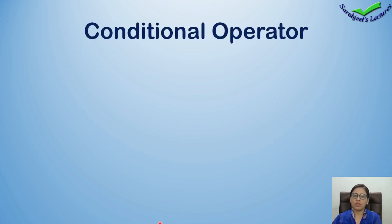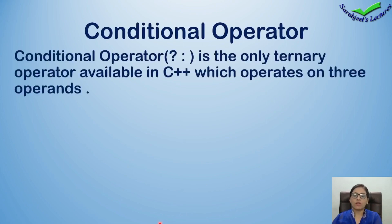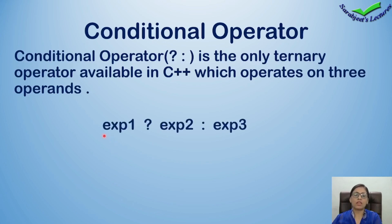Next hum dekhte hain conditional operator kya hota hai. Conditional operator ka jo sign hota hai, woh hai question mark and colon ka sign. Question mark and colon, yeh dono milke conditional operator banate hai. Conditional operator is the only ternary operator available in C++ which operates on three operands. Binary operator dho operands ke saath, ternary teen operands ke saath kaam karta hai. Iska syntax hai: expression one, question mark, expression two, colon, expression three.